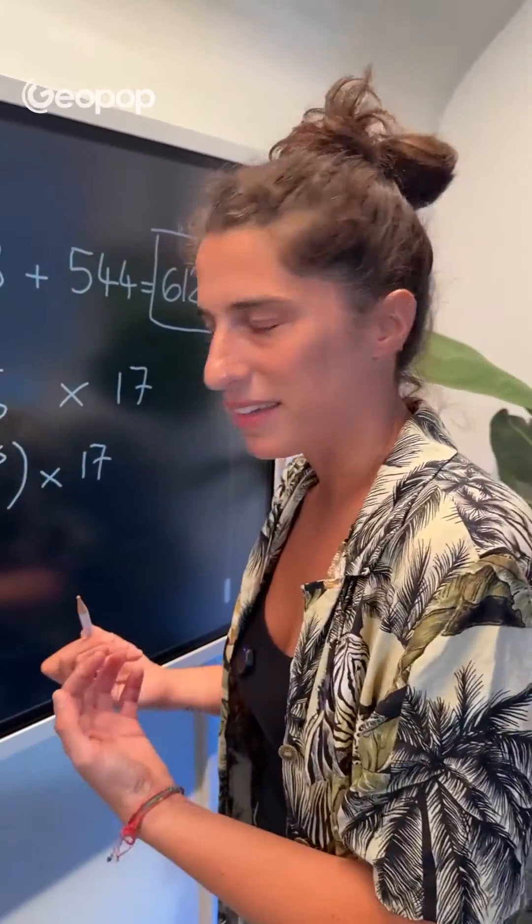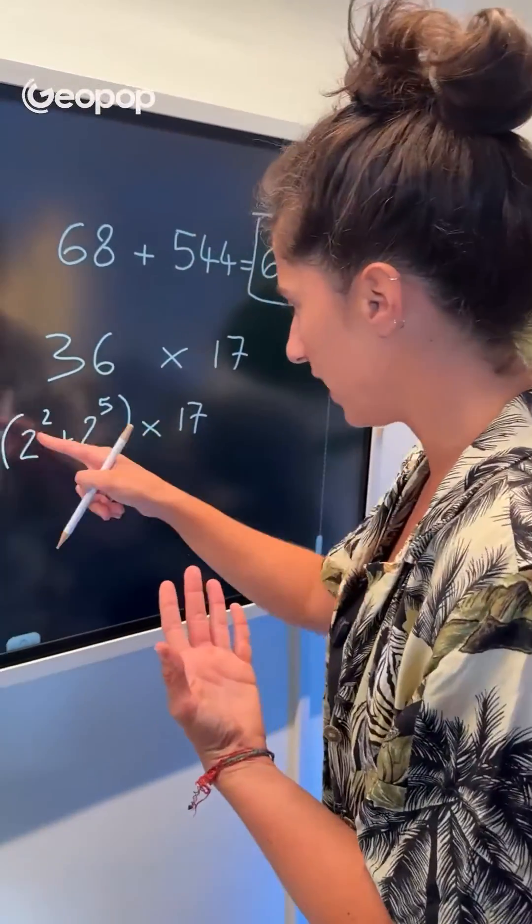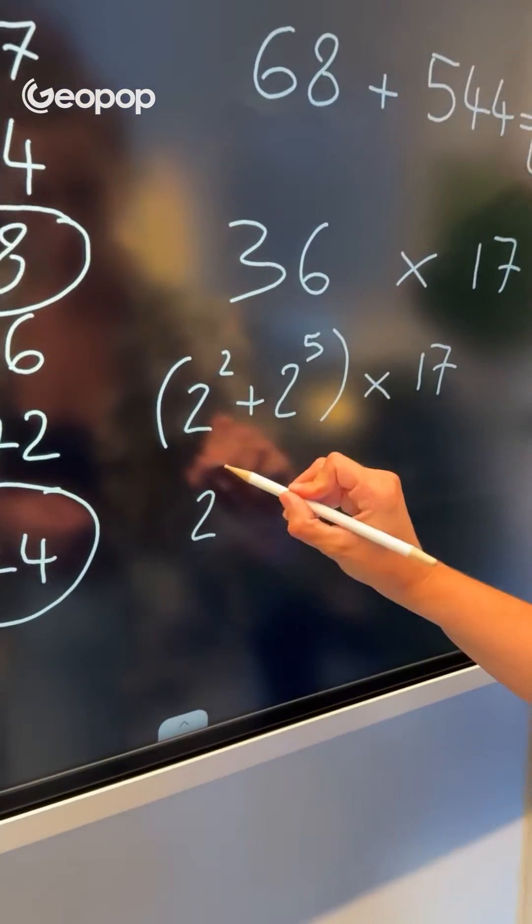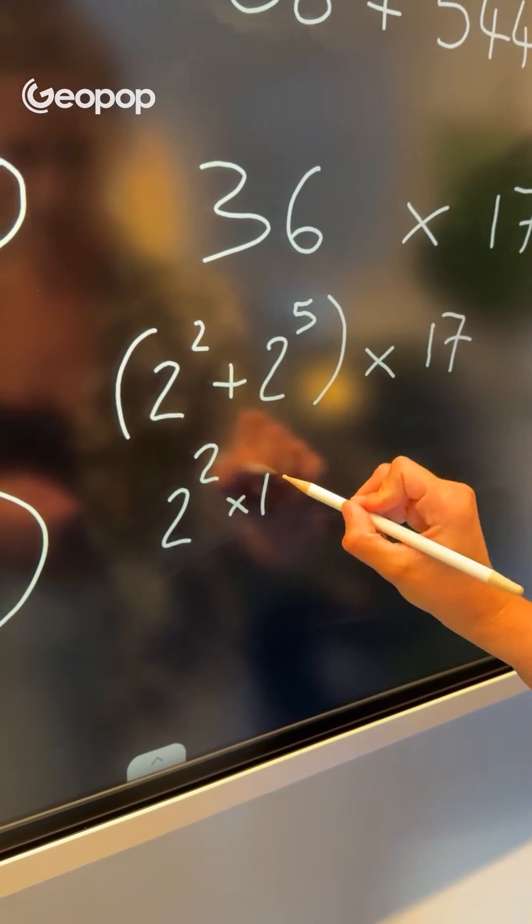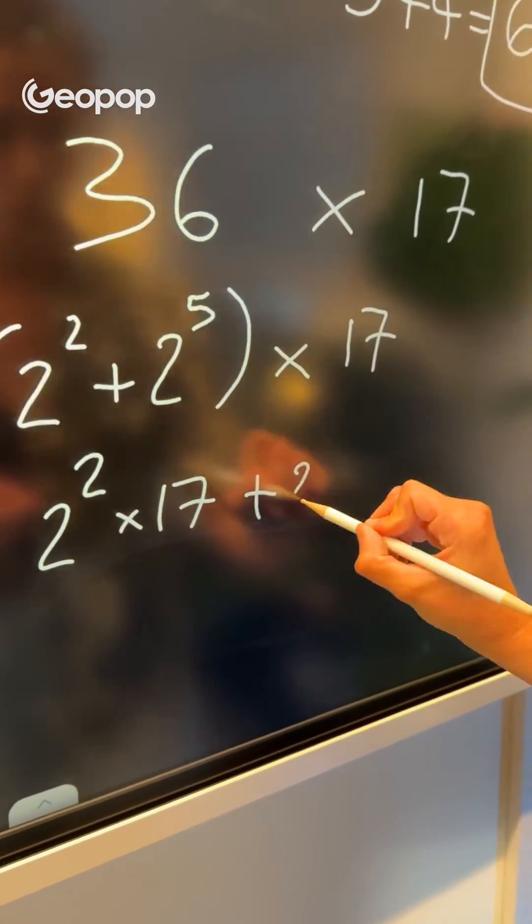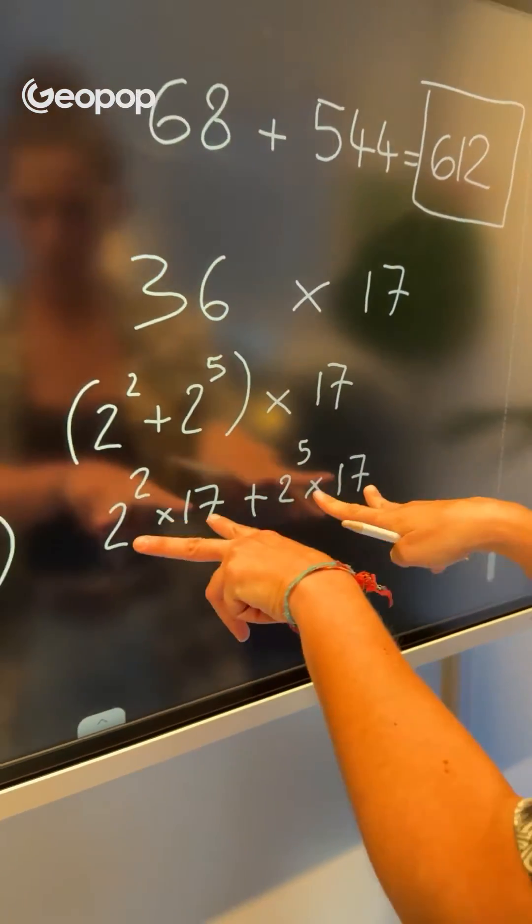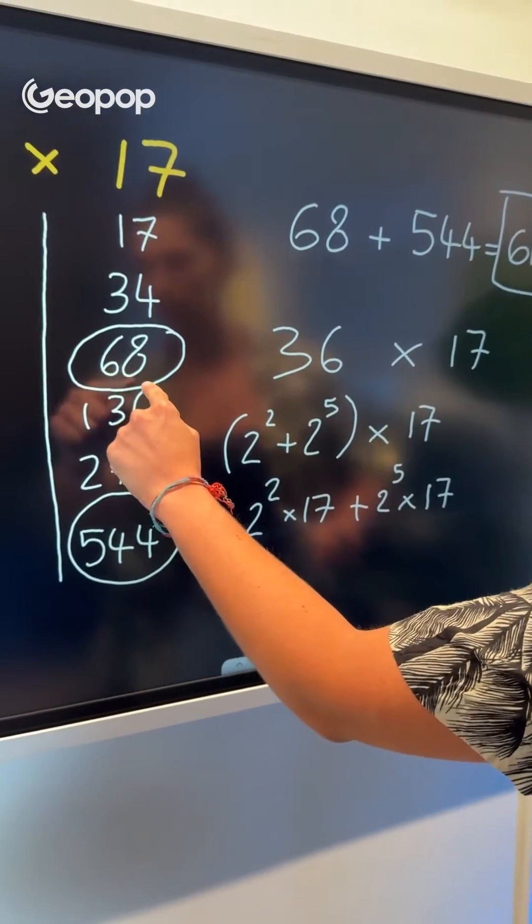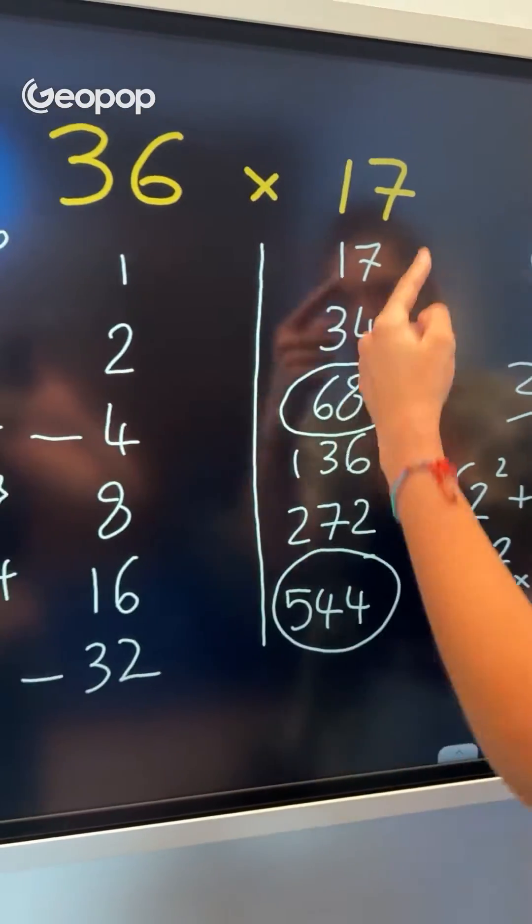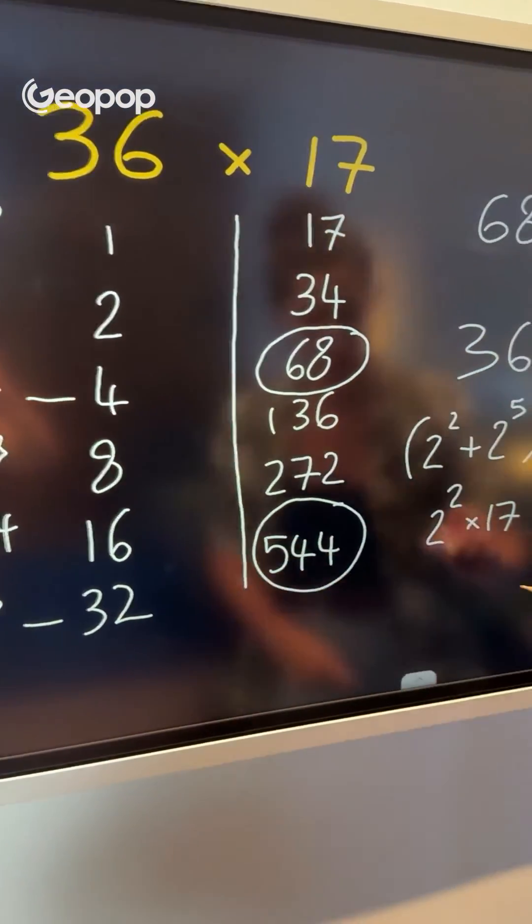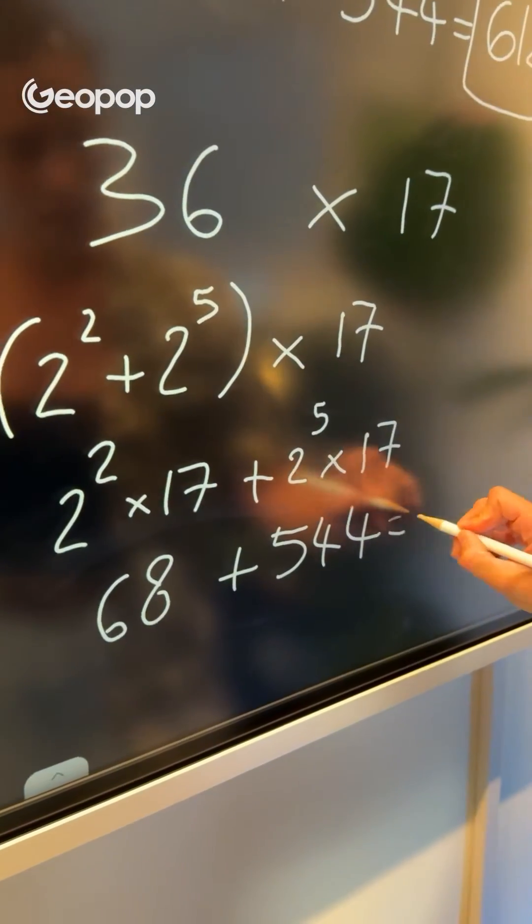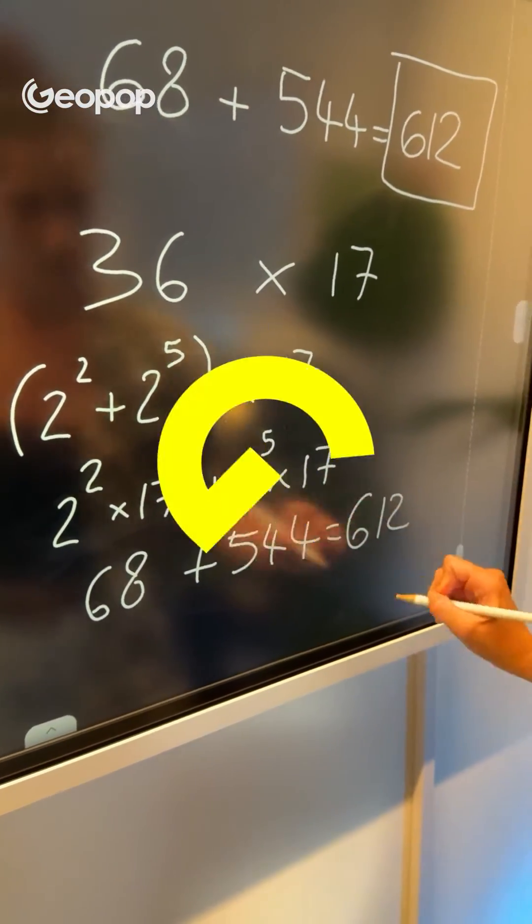At this point, essentially applying the distributive property of multiplication, this operation can basically be done as 2 to the power of 2 times 17 plus 2 to the power of 5 times 17. And these two numbers are actually 68, which is 2 to the power of 2 times 17, and 544, which together make 612. Aren't mathematics just so mathematical?